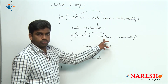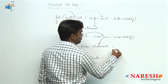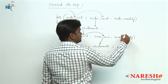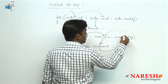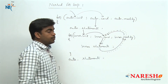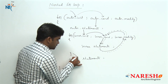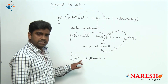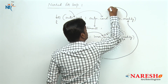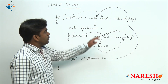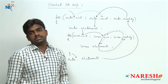If inner condition is true, the control moves inside and inner statements execute. After execution of inner statements, it will modify and again check the inner condition. As long as the condition is true, it will repeat here only. If inner condition has failed, the control comes out of the inner for loop and the remaining outer statements execute. After outer statements execute, it will go and modify the outer modify, then check the outer condition again. If outer condition is true, the same process repeats. If outer condition has failed, it terminates.